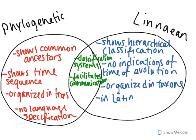Obviously they're both classification systems. We're going to first focus on the similarities between them. There aren't that many, but they are very important to determine how they both function within the scientific world in order to help scientists communicate. So they are both classification systems, and they both are able to facilitate communication. However, they facilitate communication in very different ways.